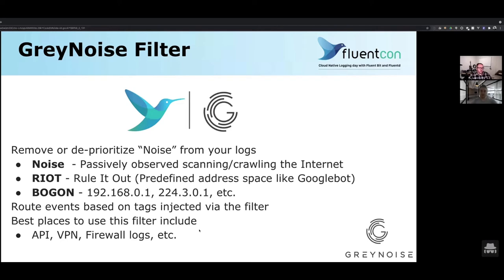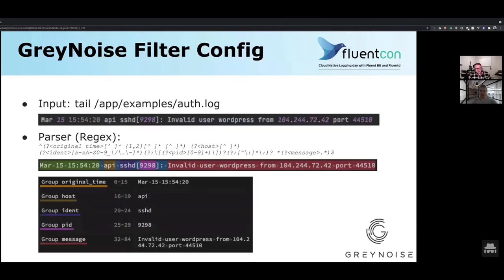It's important to point out on deprioritization that it's not just dropping records necessarily — it's largely up to the user to determine whether they want to send these log events to cheaper storage, put them in S3, and keep them out of a more expensive data store. For the GrayNoise filter config, just like Guillermo mentioned earlier, we need to build this config. We started with the input section using a tail input plugin pointed at the SSH log.